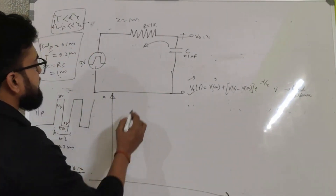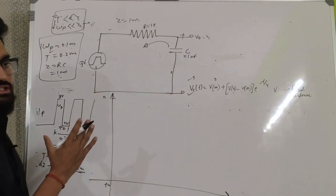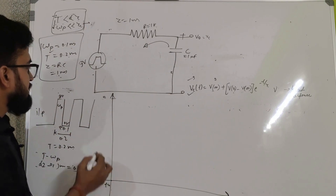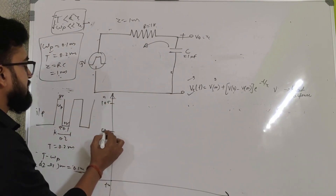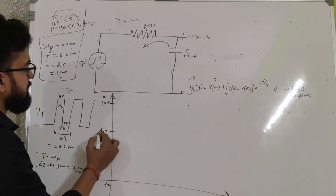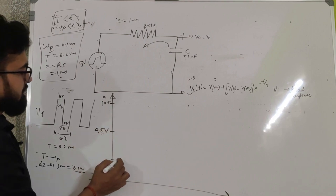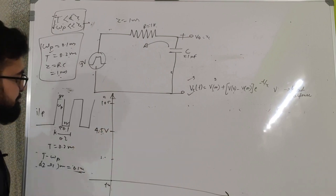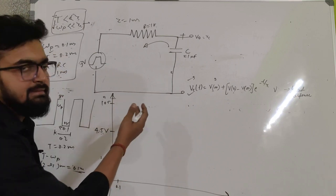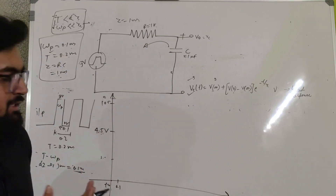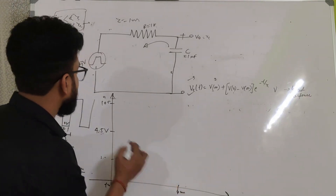At T equals 0 the capacitor will be short circuited as it does not allow a sudden change in voltage, so the output is 0 at t=0. On the voltage axis let's mark 10 volts, 5 volts, 4.5 volts, and 2.5 volts. At T greater than 0 the capacitor will start charging, and the time axis goes up to about 4 milliseconds.